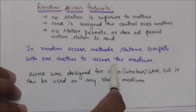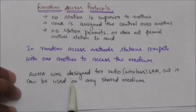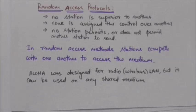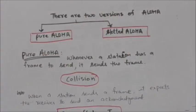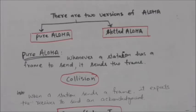Aloha is a random access method. It was designed for radio LAN but it can be used for any shared medium. There are two versions of Aloha: pure Aloha and slotted Aloha. In pure Aloha, it is a simple protocol where whenever a station has a frame to send, it sends the frame. When more than one station sends a frame simultaneously, there is a collision and the frames are destroyed, because there is only one channel to share.